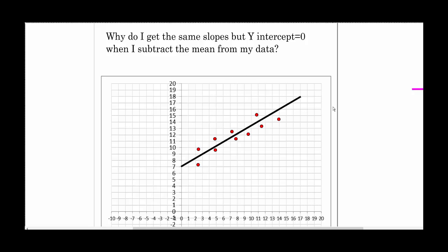And I just wanted to show you visually real quickly why this is okay. So sometimes I get the question, why do I get the same slopes but the y-intercept is equal to zero when I subtract the mean from my data? And it's easy to get an intuitive feel for what's going on here.